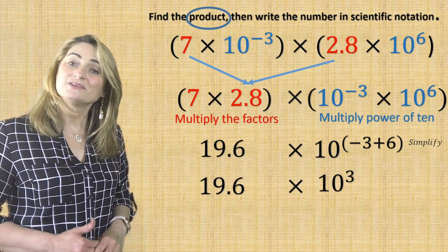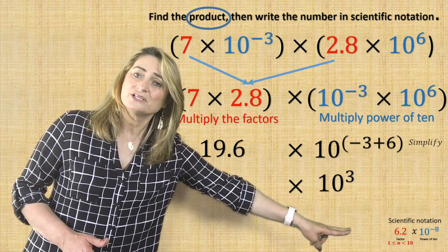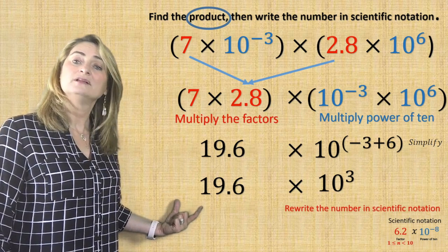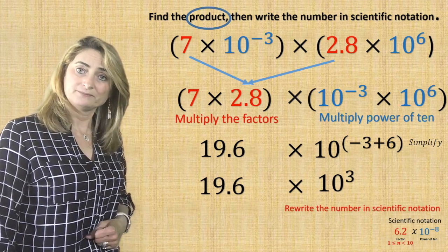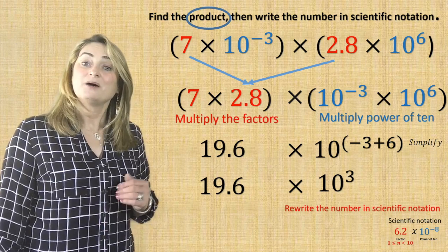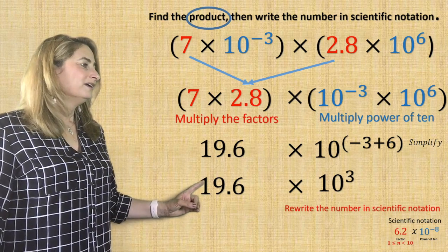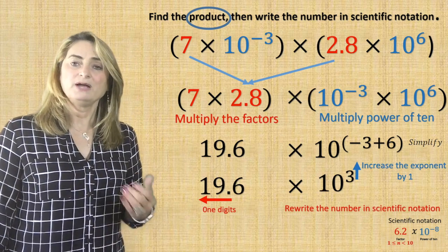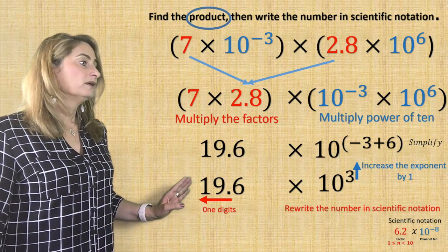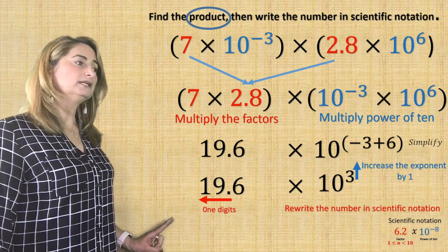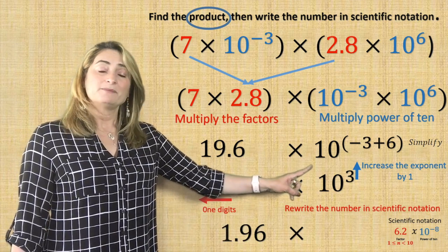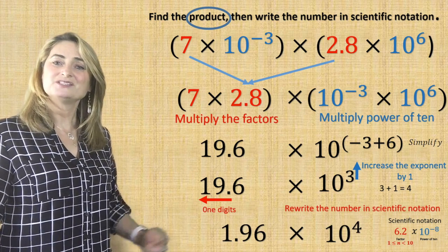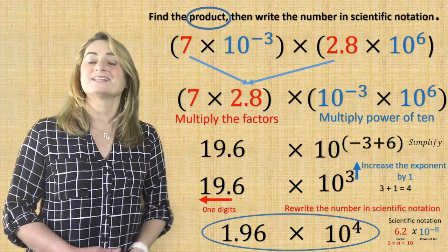Now is this number written in scientific notation? Absolutely not, because in scientific notation the factor has to be between 1 and less than 10. This is more than 10. So how can I decrease the value of the factor to have it between 1 and less than 10? Move the decimal — if you don't remember how, please watch the lesson about writing scientific notation. Move the decimal to the left one digit, and if I do that, I have to increase the exponent by 1, multiplying it by 10 to the power of 1. You will get 1.96 times 10 to the power of 4, since 3 plus 1 is 4. Now this number is written in scientific notation and it's the product of multiplying two scientific notation numbers.